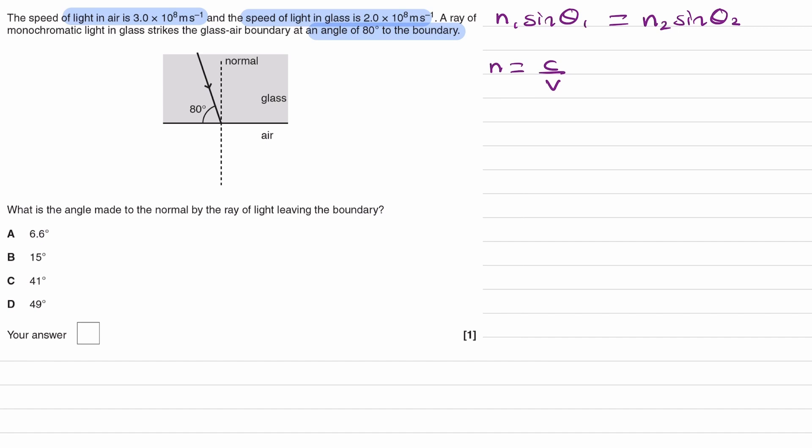The refractive index of air, let's call that n2, would just be 1. It's pretty much the same as the refractive index of a vacuum.